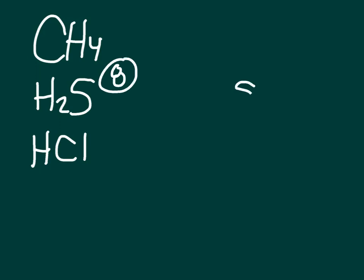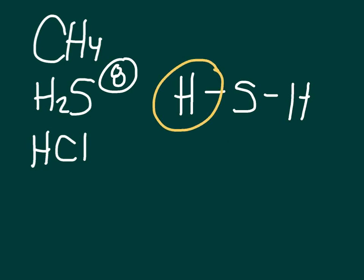Sulfur goes in the middle with single bonds drawn to the sides. Use single bonds to connect the central atom — you might be done. Count your valence electrons: I've got two around each hydrogen, so my hydrogens are fine. But sulfur only has four electrons and it wants eight, so I have to move on to step four: add electrons to the outer atoms.